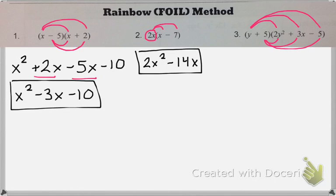So I'm going to draw in lots of rainbows here, and I'm going to start multiplying. y times 2y squared is 2y cubed. y times 3y is 3y squared, and then y times negative 5 is negative 5y. And then I need to multiply my bottom rainbows.